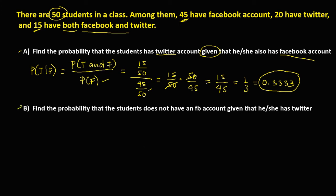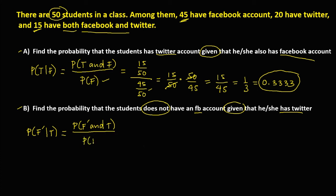Now find the probability that the student does not have a Facebook account given that he has a Twitter account. That's the probability of Facebook complement given Twitter. We can rewrite this as the probability of the Facebook complement and Twitter account over the probability of having a Twitter account. This can be rewritten as the probability of Twitter account minus the probability of having both Facebook and Twitter account, over the probability of having a Twitter account.